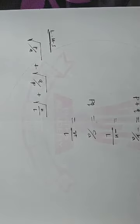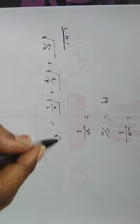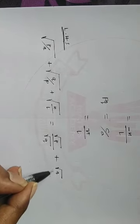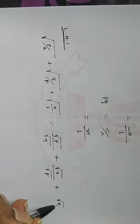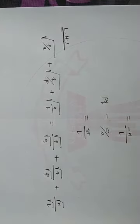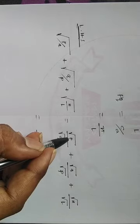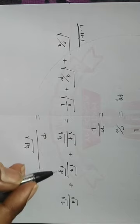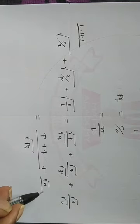So LHS — I am going to write it, and RHS is 0. So I am going to write here: root P by root Q plus root Q by root P plus root N by root L. For the first two terms, we are going to multiply by root of PQ.